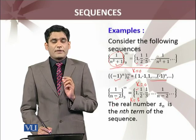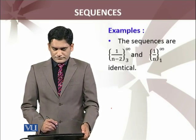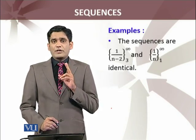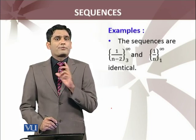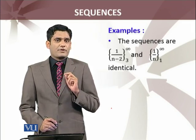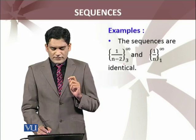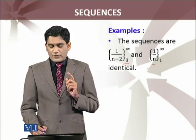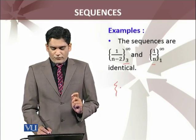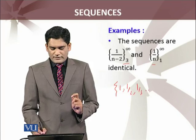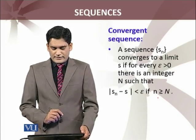In all three examples, the expression is known as the nth term of the sequence. Similarly, you are now looking at two sequences which appear to be different, but they are actually equal sequences. The values of n start from 3 in one and from 1 in the other, but if you write out the values, you get the same terms: 1, 1/2, 1/3, and so on. So these sequences are known as identical sequences.